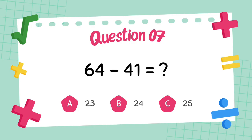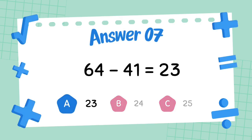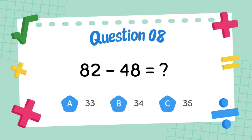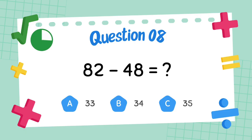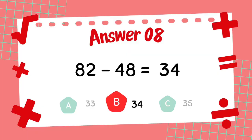What is 64 minus 41? The answer is 23. What is 82 minus 48? The answer is 24.